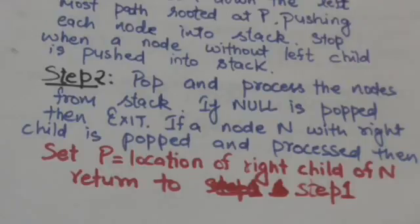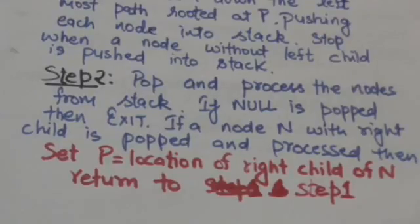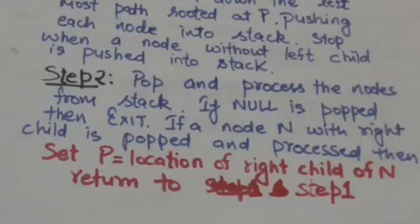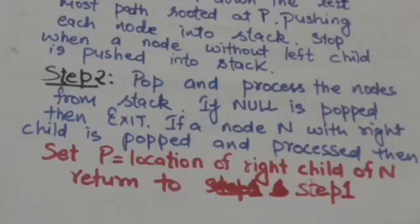In step 2, we will pop and process the nodes from the stack. If null is popped from the stack then the algorithm will stop. If a node N with a right child is popped from the stack and processed, then we will assign the location of the right child of node N to variable P and return to step 1.